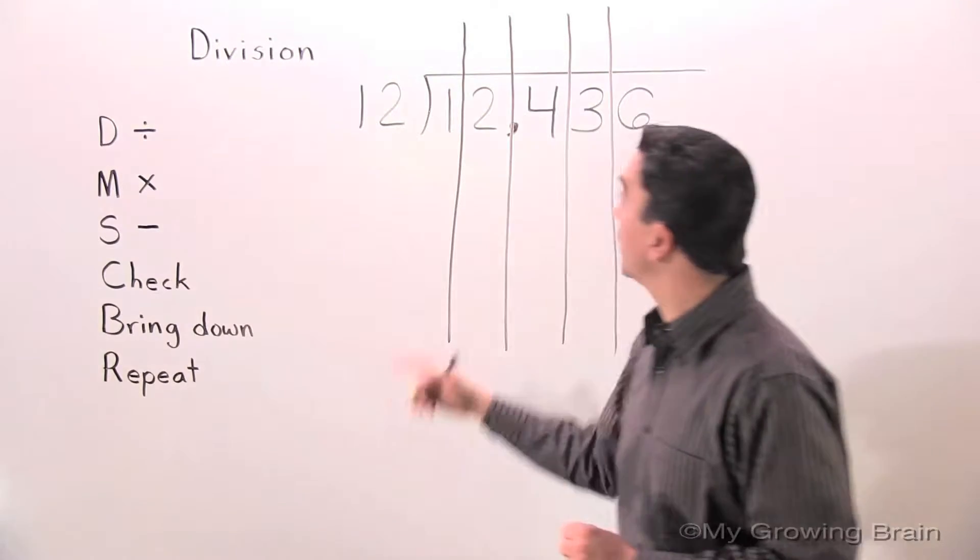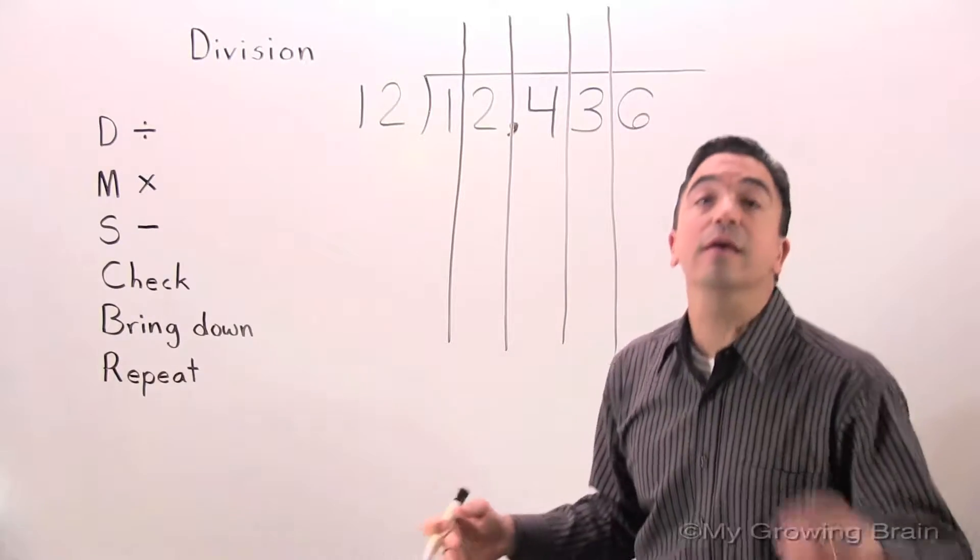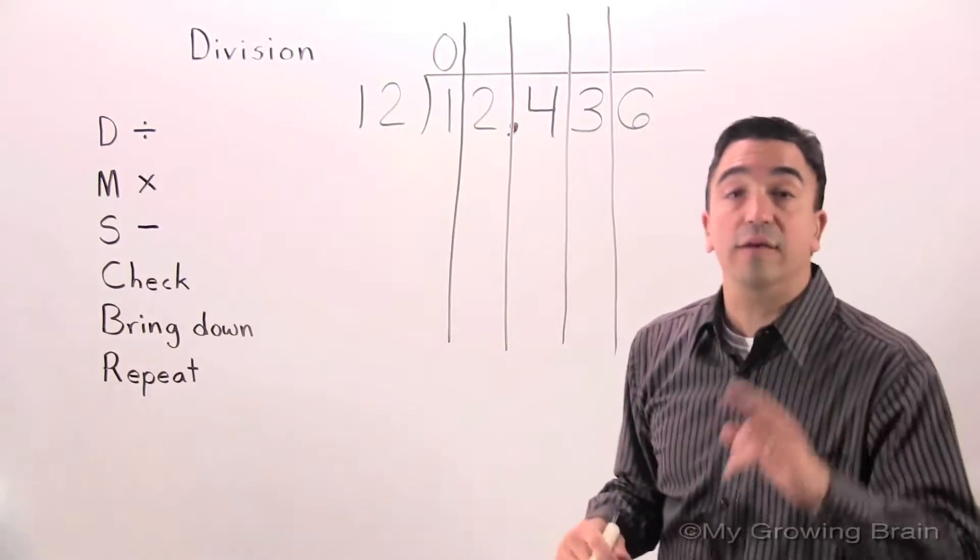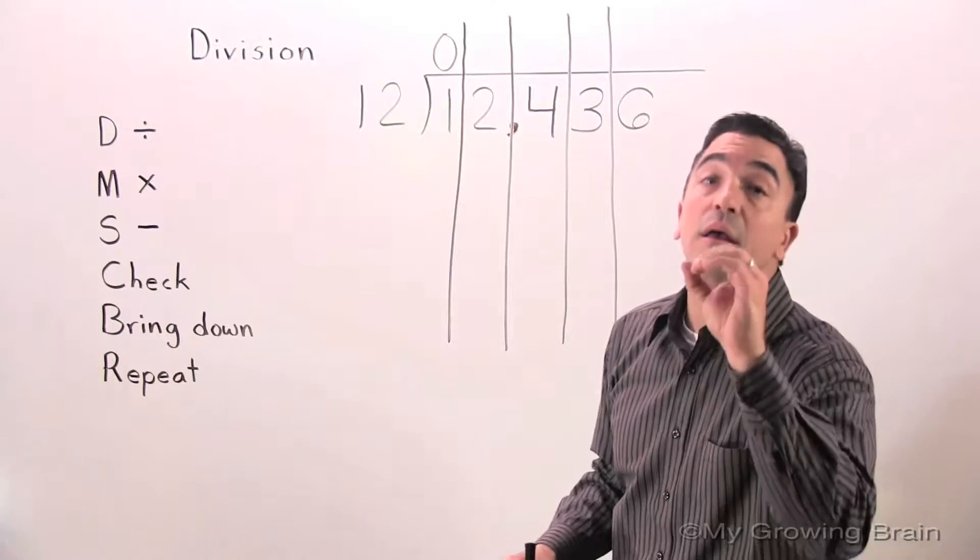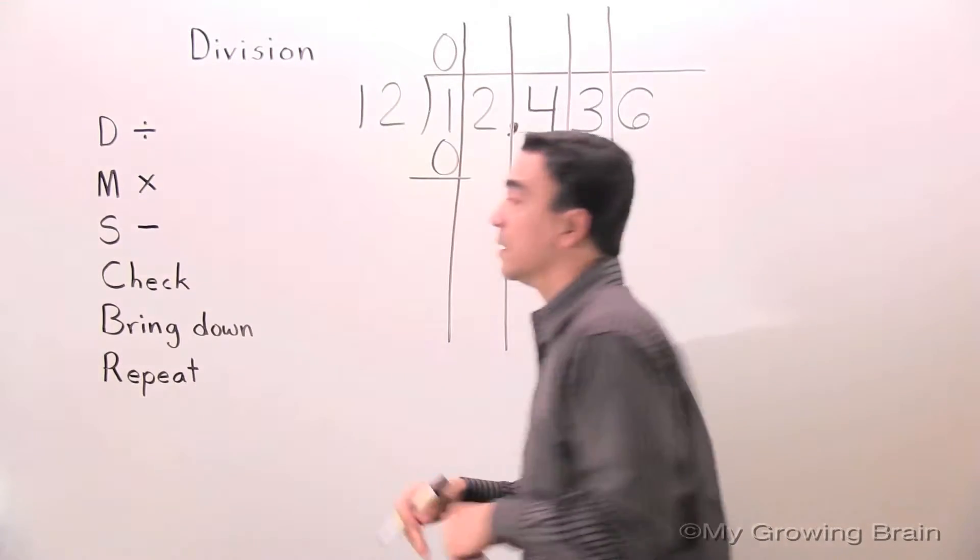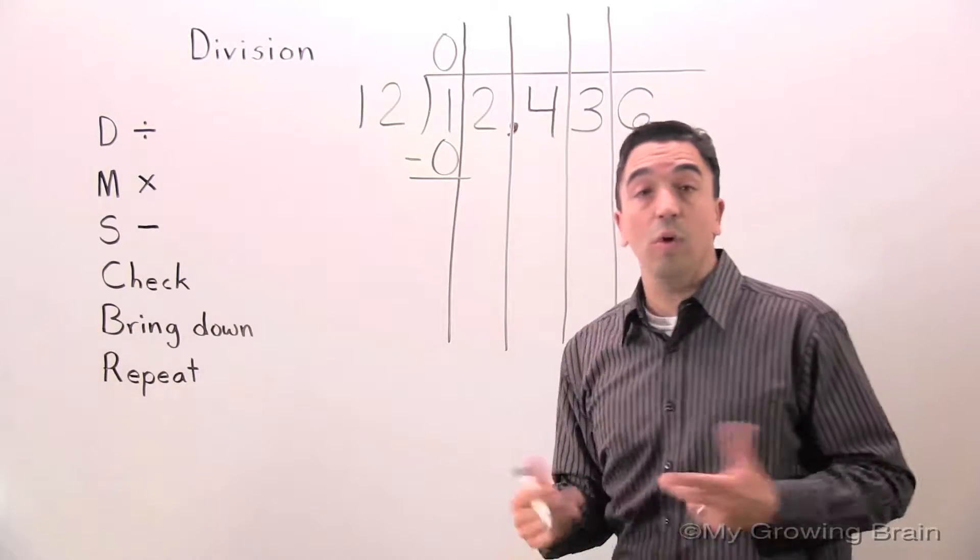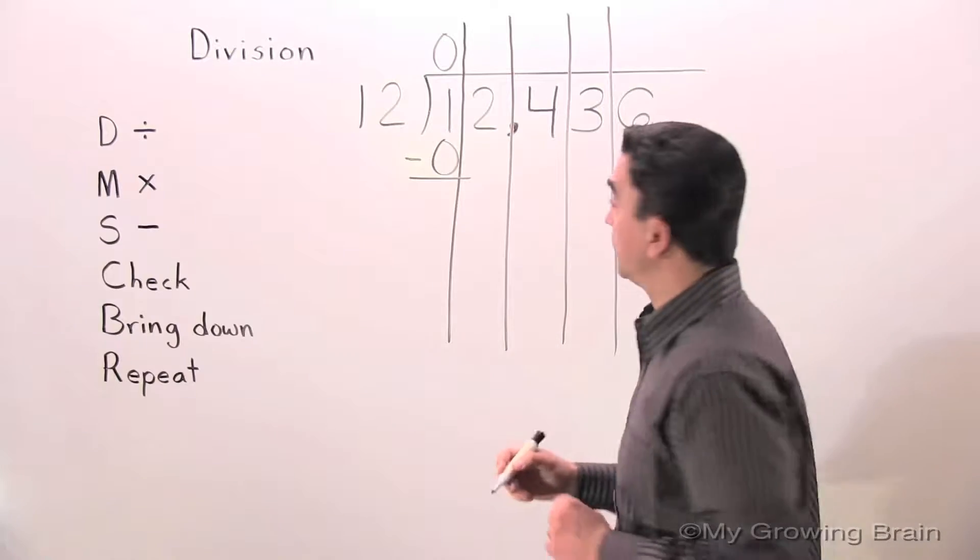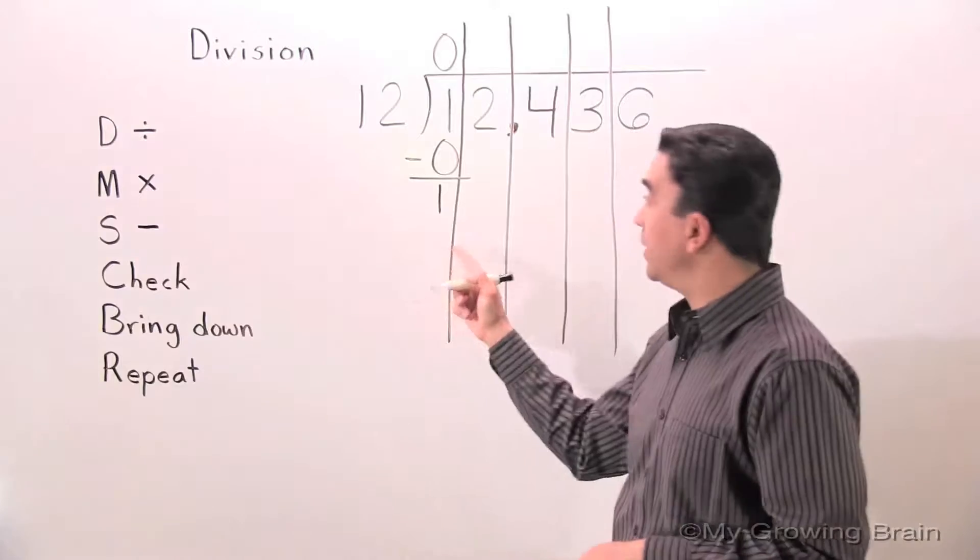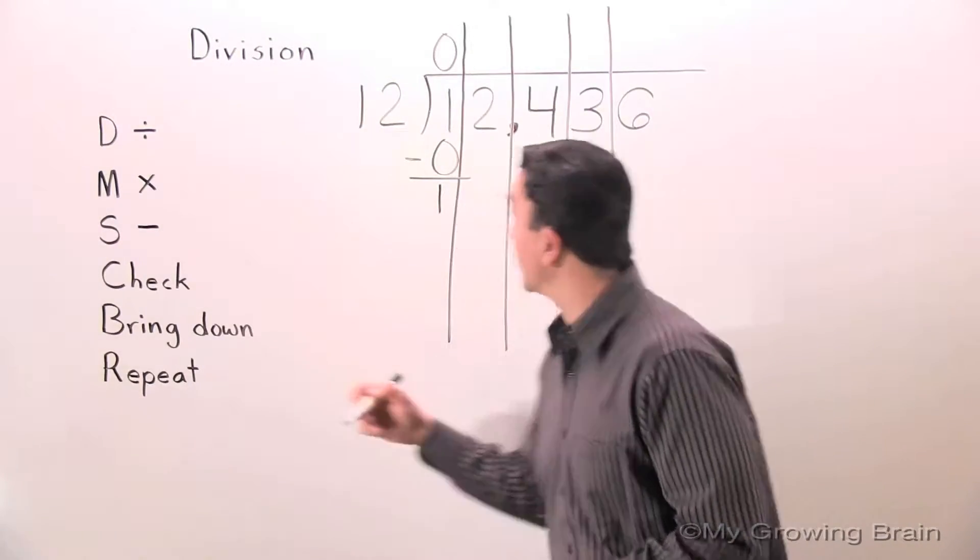First step: divide. 1 divided by 12, or 12 into 1? Can't do it. Use a 0. Next step: multiply. 12 times 0 is 0. Next step: subtract. 1 minus 0 is 1. Next step: check. 1 is less than 12. Keep on going. Next step: bring down.